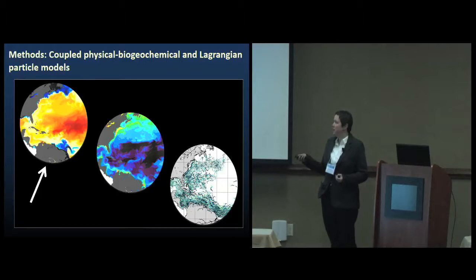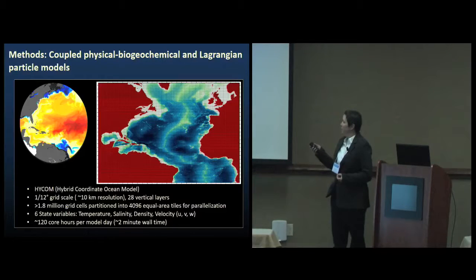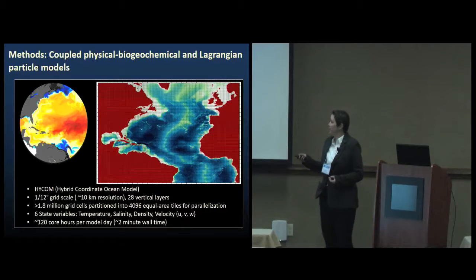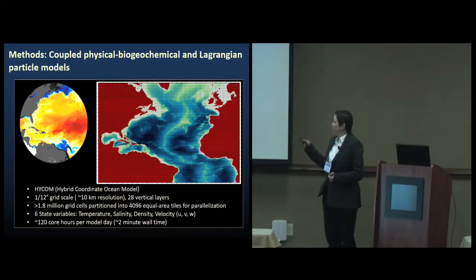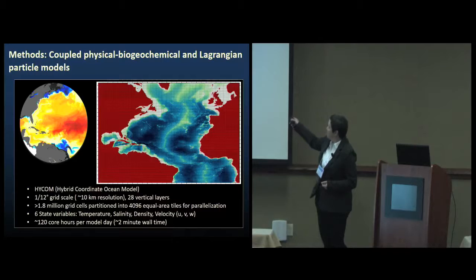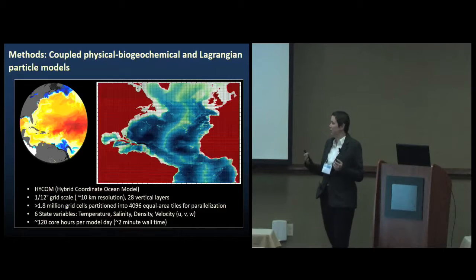So the physics model, I've chosen HYCOM, the Hybrid Coordinate Ocean Model. I've generated this domain for the Atlantic at a 1/12th degree or roughly a little less than 10 kilometer resolution. Each of these tiny little boxes on this figure are actually 10 by 10 grid cells in my model. That's over 1.8 million grid cells, and each of those has 28 vertical layers.